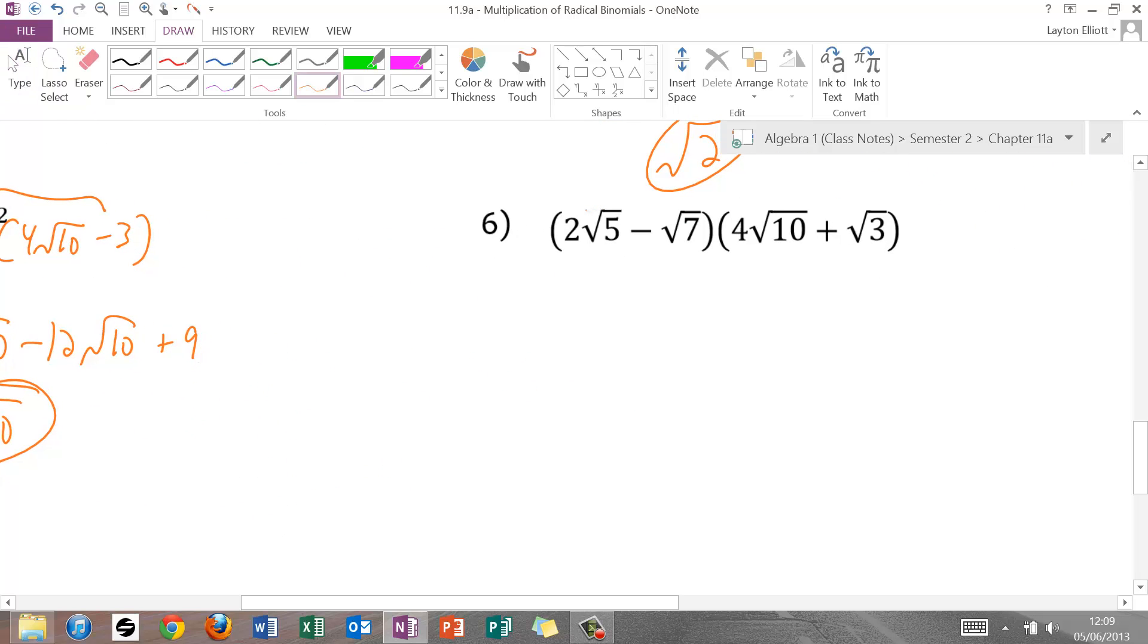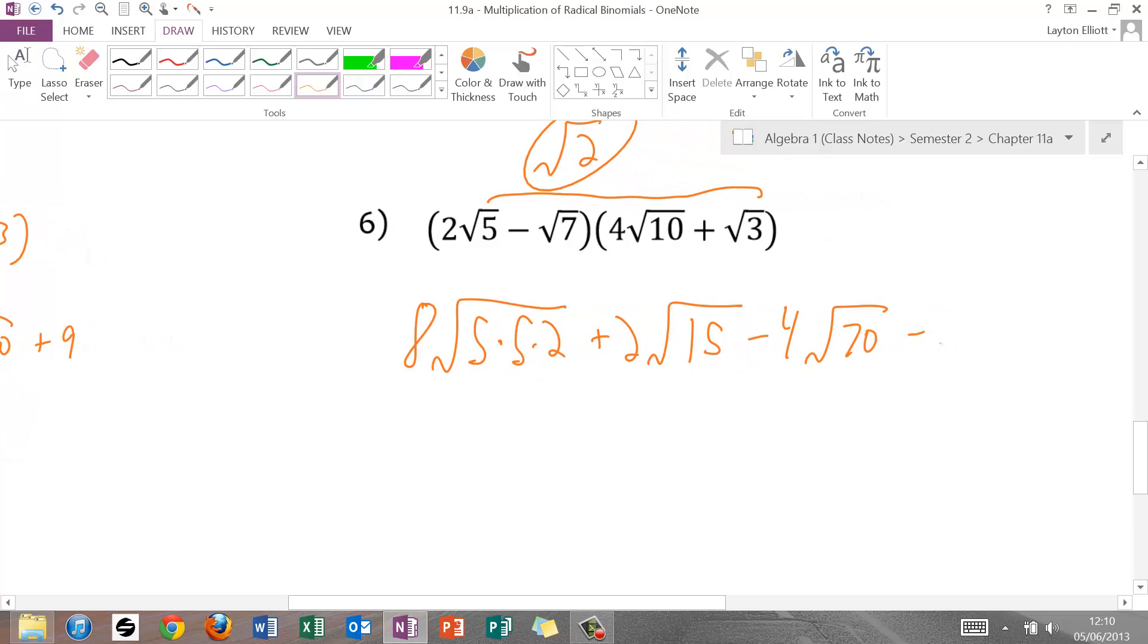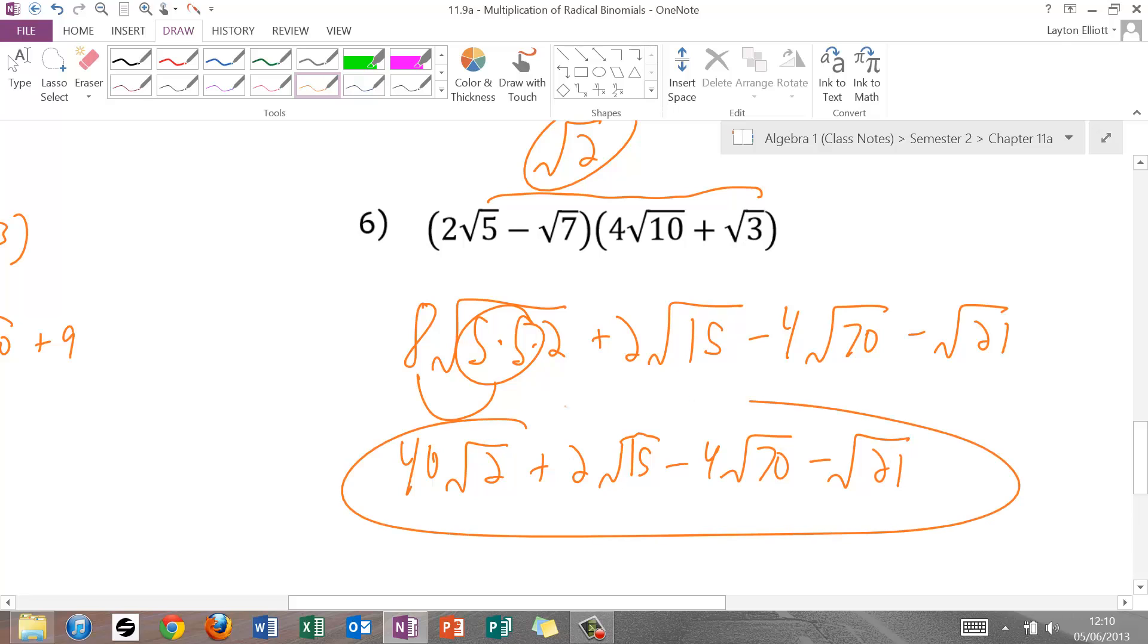Number 6 is a foil. First, 2 times 4 is 8. Then the square root parts, 5 times 10. I'm going to put that as 5 times 5 times 2, because 10 is 5 times 2, and that will help me later. Outer, we have plus 2. And 5 times 3 is 15. I know that's not going to simplify, so I might as well just put it as radical 15 now. Inner, minus 4. Radical 70 is also not going to simplify. And then last, minus radical 21. Okay, let's take out that 5. 40, radical 2. Plus 2, radical 15. Minus 4, radical 70. Minus radical 21. It's pretty big by a polynomial. Nothing can simplify. So we leave it as it is.